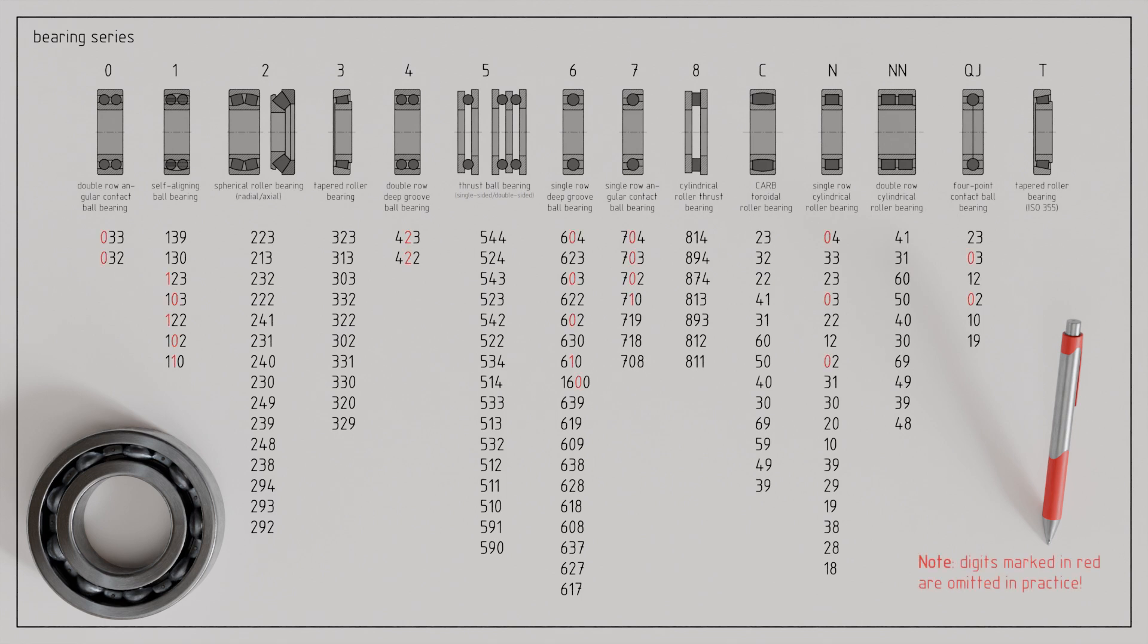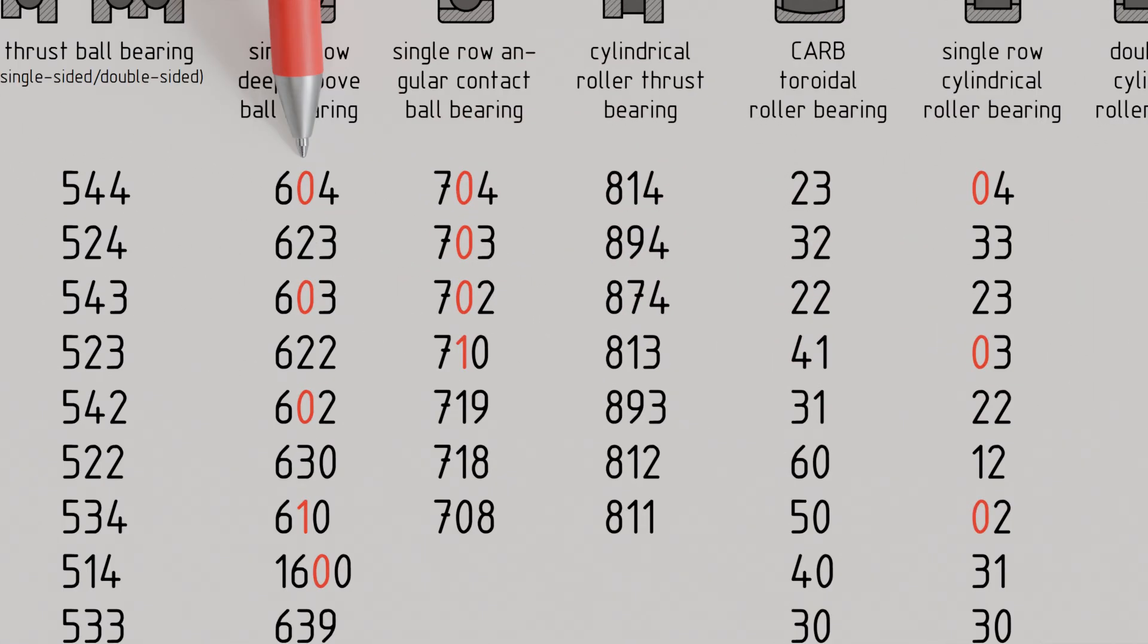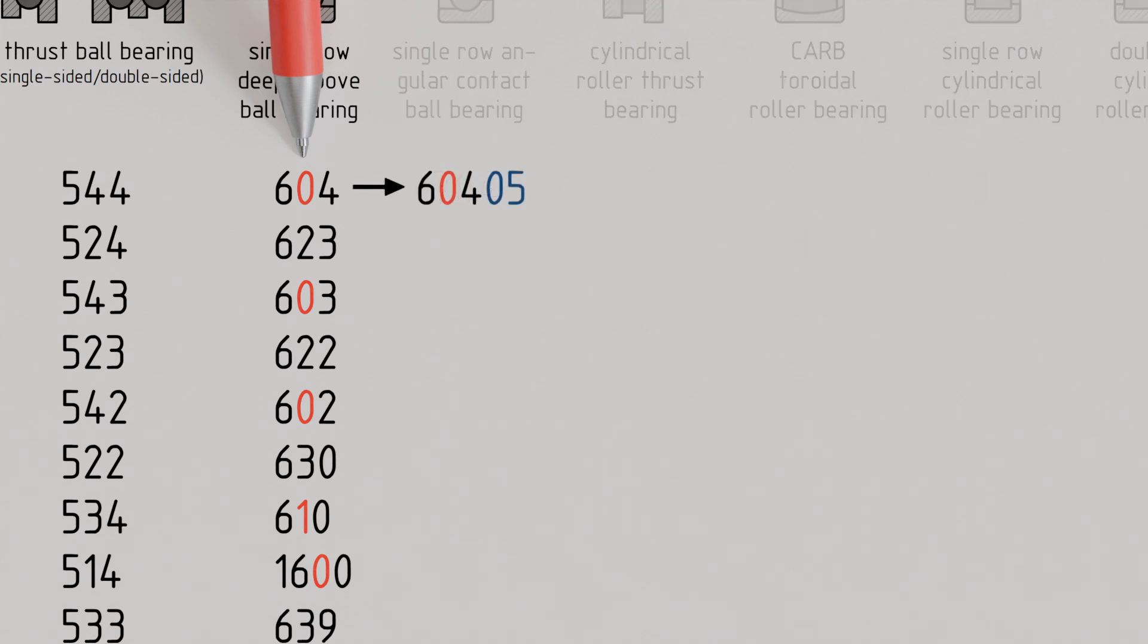To illustrate this, consider the deep groove ball bearing with bearing series 6, width series 0, and diameter series 4. The bore diameter with bore code 05 is thus 25 mm. According to the standard, the complete designation of the rolling bearing would be 60405. In practice, however, the width series 0 is not specified, so this bearing is listed under the common designation 6405.